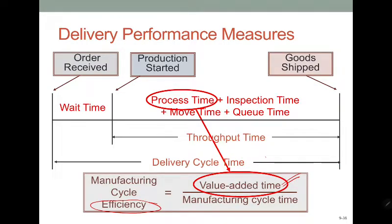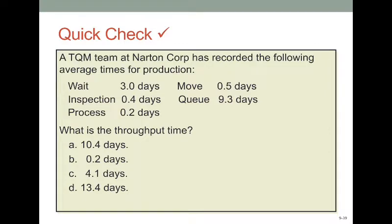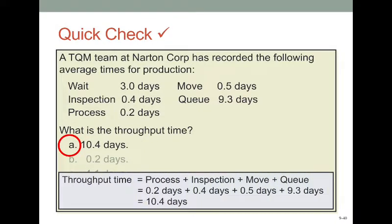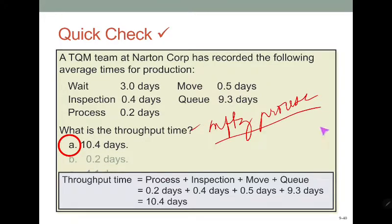Let's look at a sample. For throughput time, you take the total time from the physical start of the manufacturing process to its physical end — it is 10.4 days. For manufacturing cycle efficiency, you only take the process time, since that is the only value-added time. Inspection, move, and waiting are all non-value-adding activities.